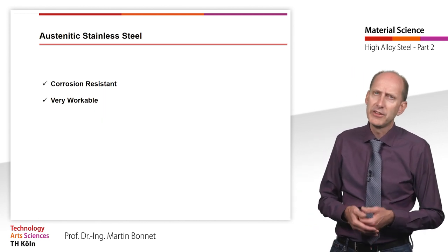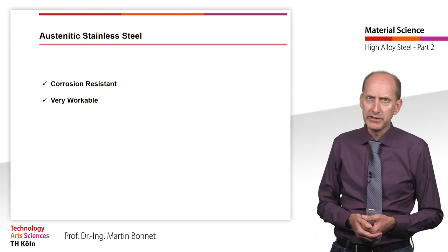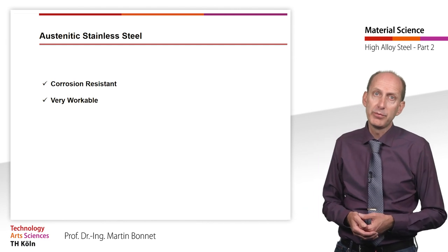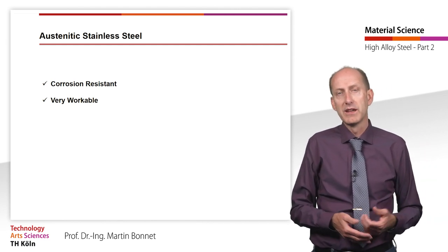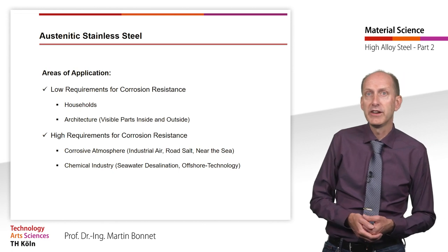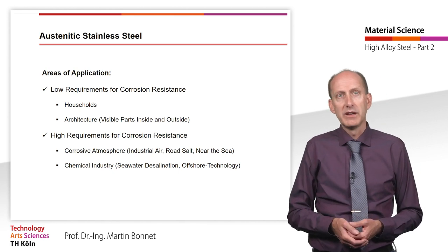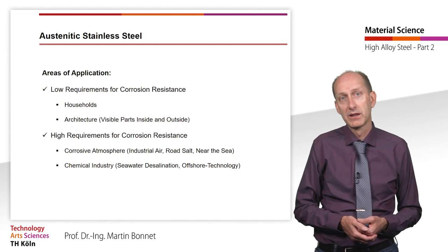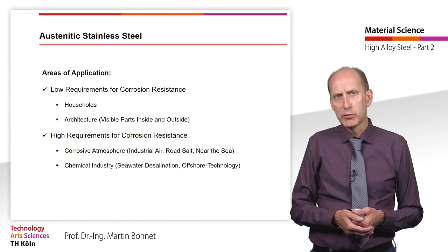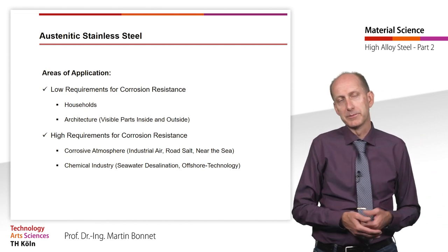Austenitic stainless steel is the most widely used of the stainless steel types in terms of volume. With a wide variety of additives, most corrosion resistance requirements can be satisfied. Chromium-nickel steel with pure austenitic microstructure is very workable and can be found in many areas of daily life. Without molybdenum, this steel is used in areas with low requirements for corrosion resistance — in households, in architecture, as aesthetic visible parts inside and outside. Molybdenum-containing austenitic steel must be used in cases with unfavorable exposure to industrial air, when road salt is used in winter or near the sea.